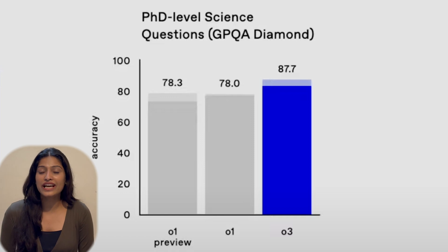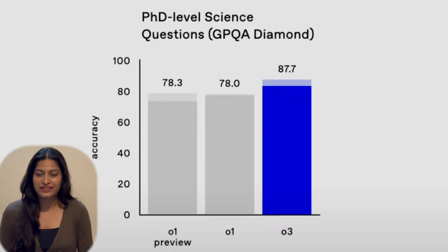So what can O3 actually do in the real world? The possibilities are endless. In science, O3 can solve PhD-level problems in fields like physics and chemistry, achieving accuracy rates nearing 88%, compared to O1's 78% — a 10% improvement in just one iteration. In software engineering, O3 isn't just good at writing code; it excels at debugging, optimizing, and creating entirely new algorithms. In education, imagine students using O3 to tackle advanced math problems. With its near-perfect scores on exams like AIME, it could revolutionize personalized learning, giving every student access to an AI tutor that explains tough concepts tailored to their learning style.